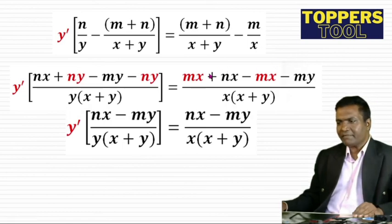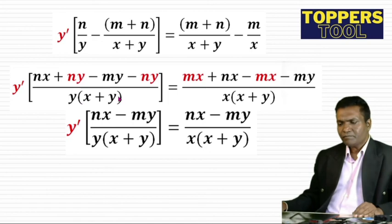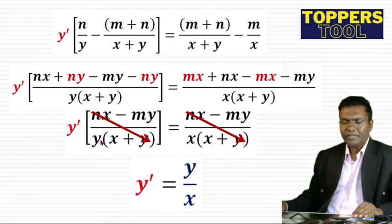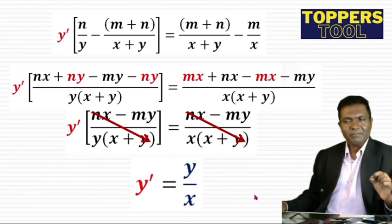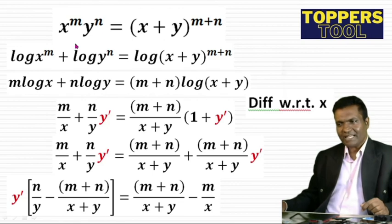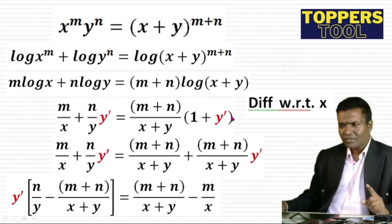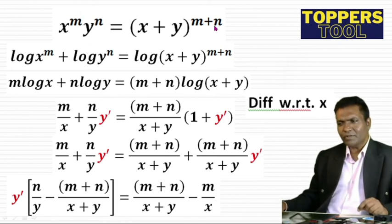After full simplification with LCM, terms cancel: nx and mx cancel, leaving the numerator as n(x-y) type terms, and the denominator similarly reduces. The (x+y) factors cancel, and ultimately dy/dx = y/x. So remember: if x^m · y^n = (x+y)^(m+n), then dy/dx = y/x.